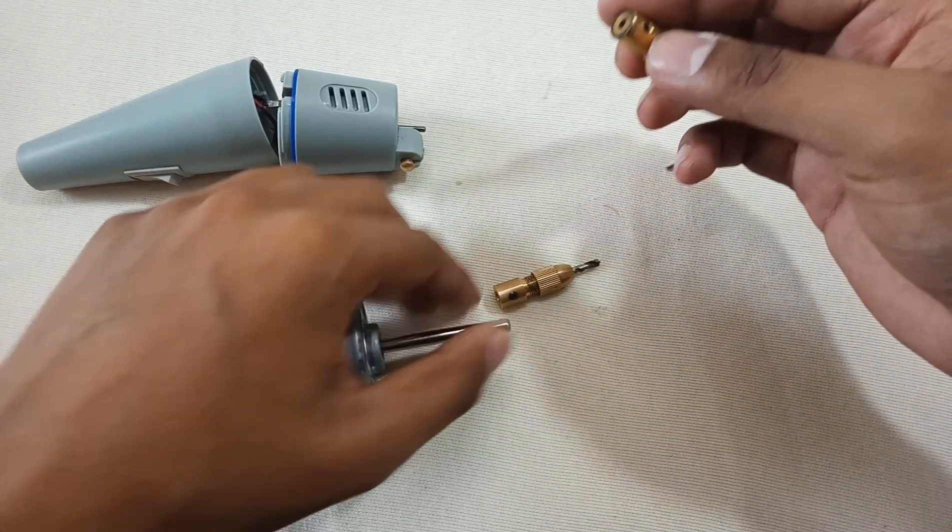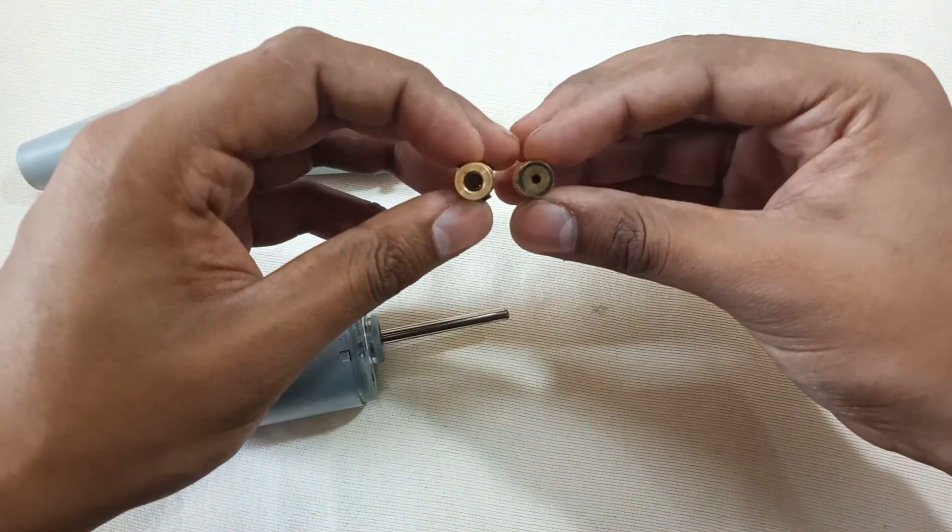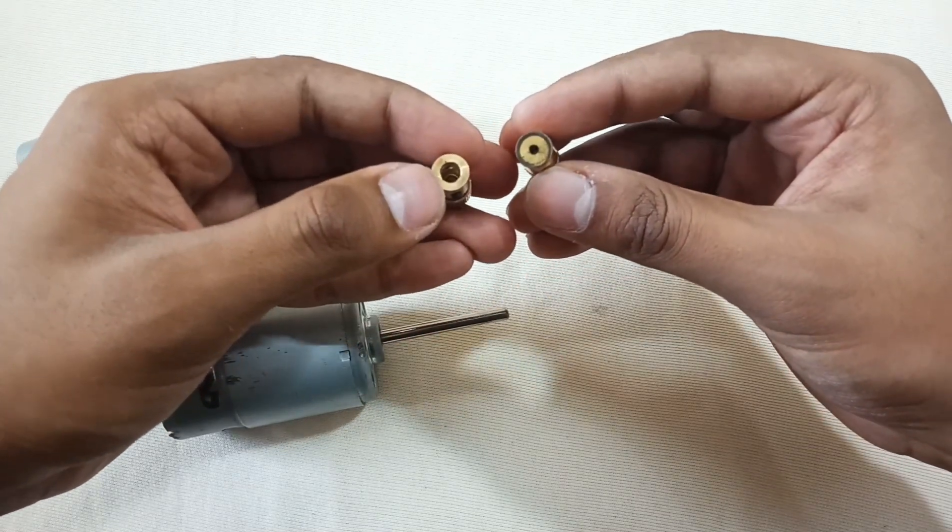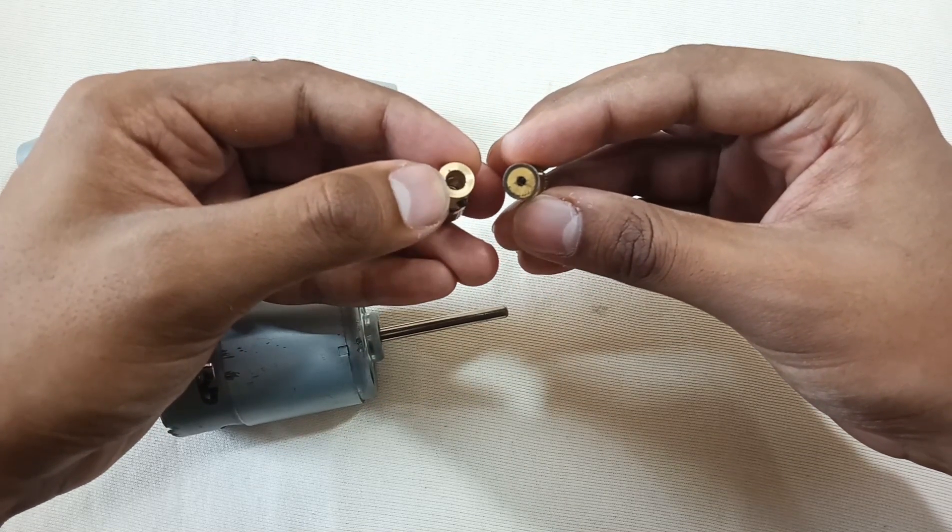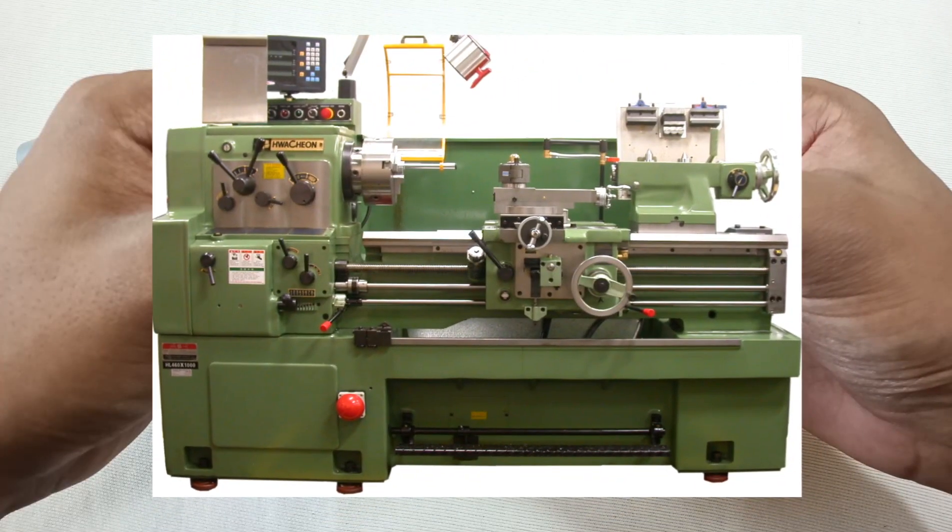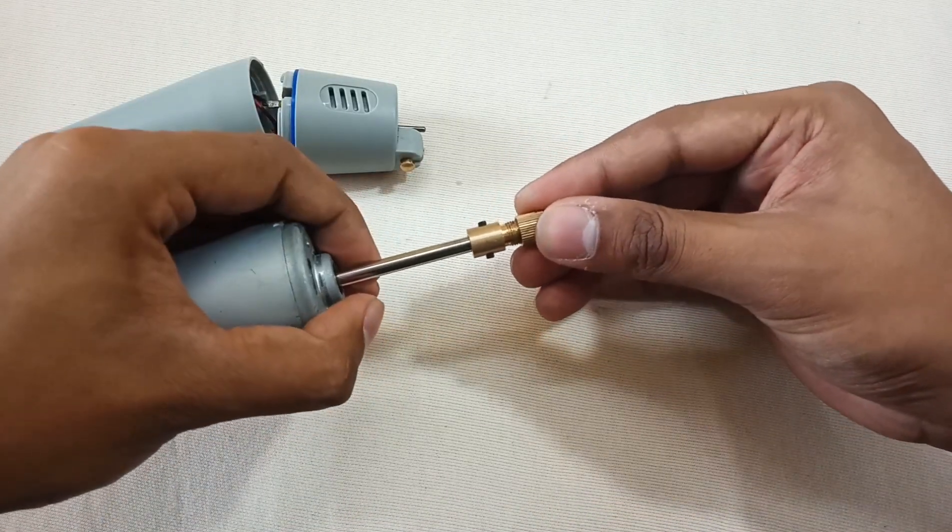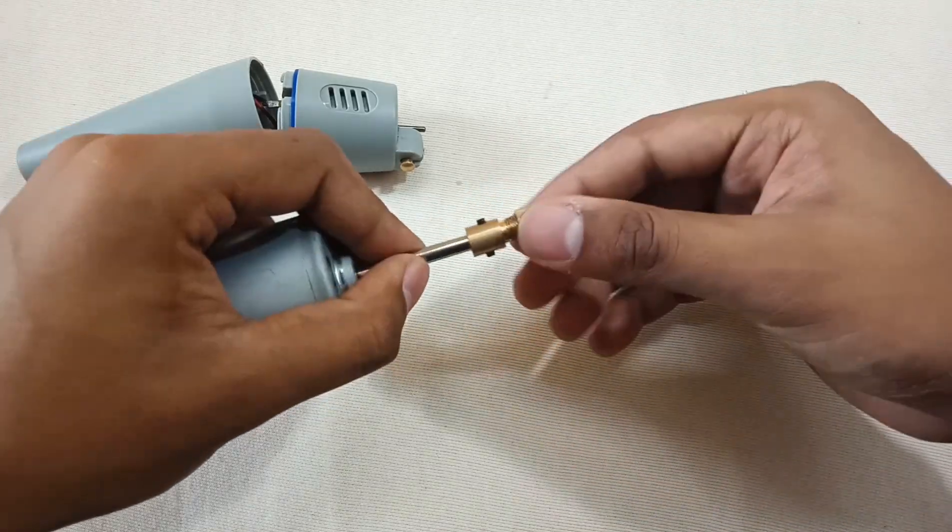So see, what you have to do is too simple: bore a 5mm hole with the help of a lathe machine to this 3mm connector, so you can easily fit this onto the 775 DC motor